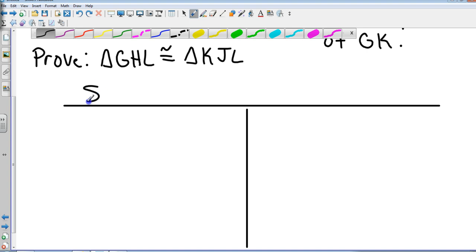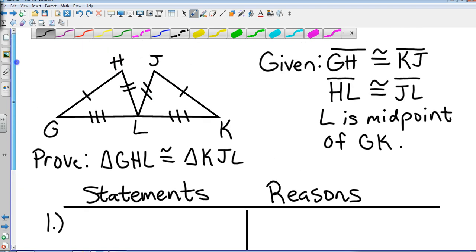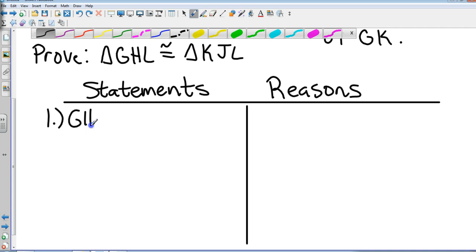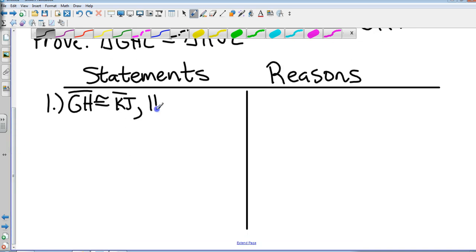Two-column proof: left side is our statements, right side is our reasons. It does work in real life; this is called cause and effect. It's just written down on paper. For statements, they gave us GH congruent to KJ, HL congruent to JL, and L as the midpoint of GK. Reason: given.